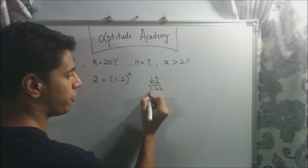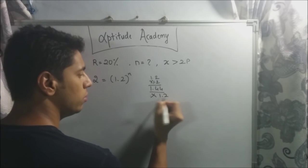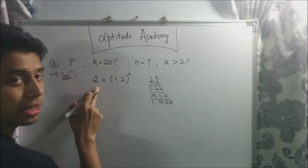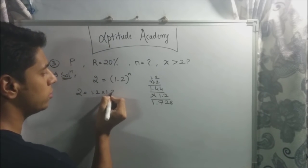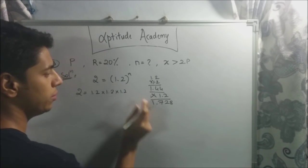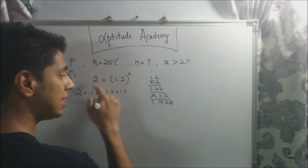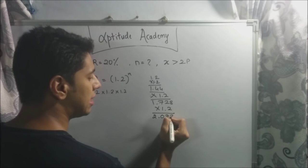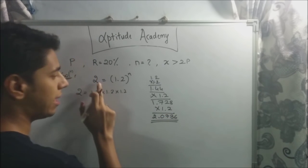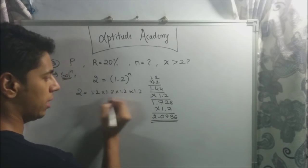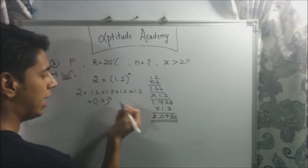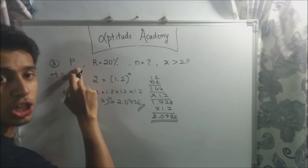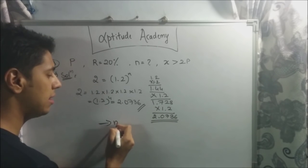Multiplying step by step: 1.2¹ = 1.2; 1.2² = 1.44; 1.2³ = 1.44 × 1.2 = 1.728, still less than 2; 1.2⁴ = 1.728 × 1.2 = 2.0736, which is greater than 2. So 1.2⁴ gives 2.0736, which exceeds twice the initial amount. Therefore N = 4 years.